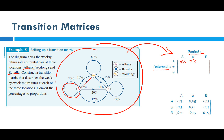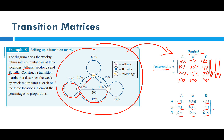Continuing to fill out the matrix: 12% for Benalla-to-Albury, 10% for Albury-to-Wodonga, 80% for Wodonga-to-Wodonga, 11% for Benalla-to-Wodonga, 20% for Albury-to-Benalla, 15% for Wodonga-to-Benalla, and 77% for Benalla-to-Benalla. Notice the columns all add up to 100: 70+10+20=100, and so on. Then divide by 100 to get your decimals and you've set up the transition matrix.